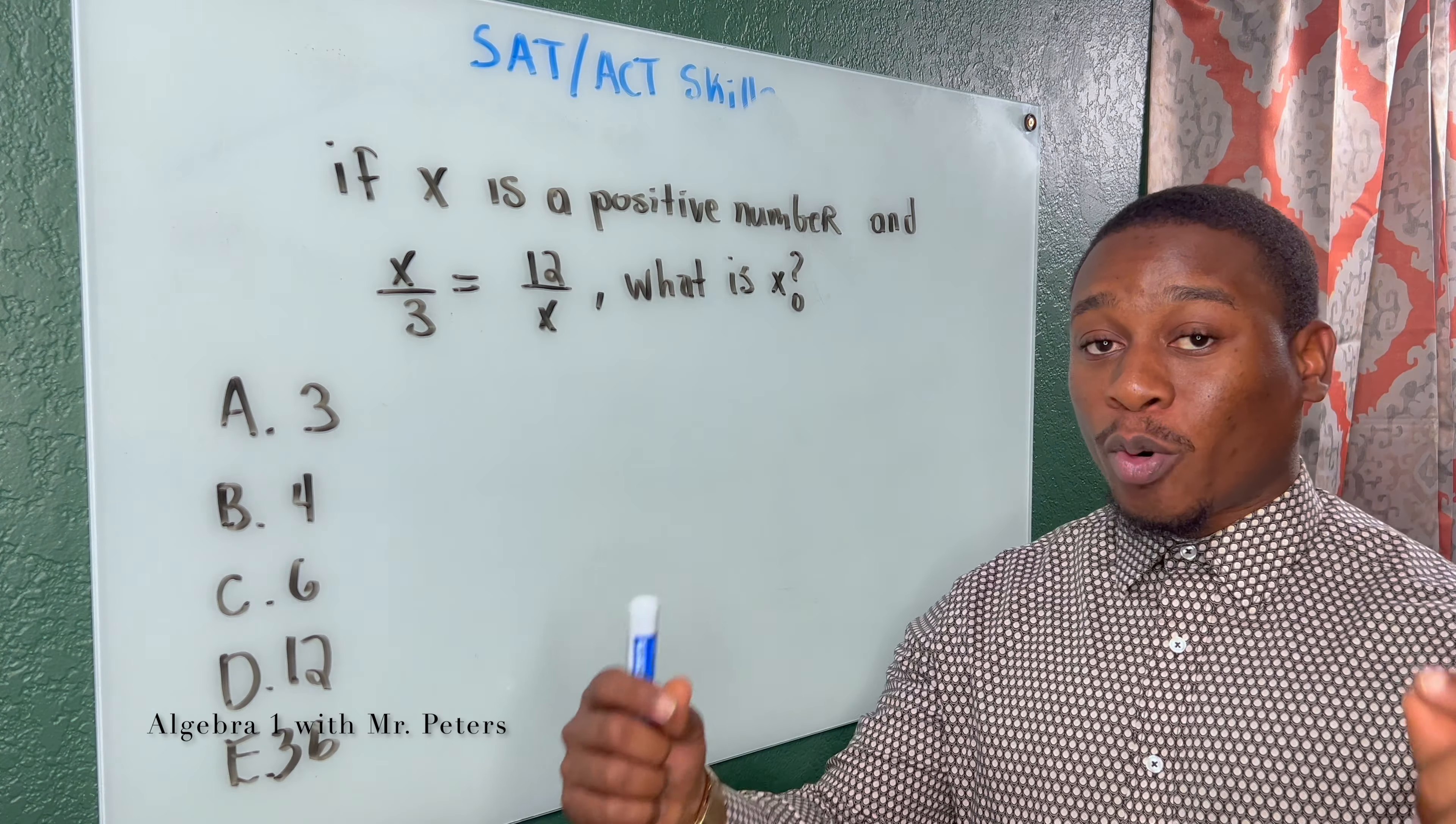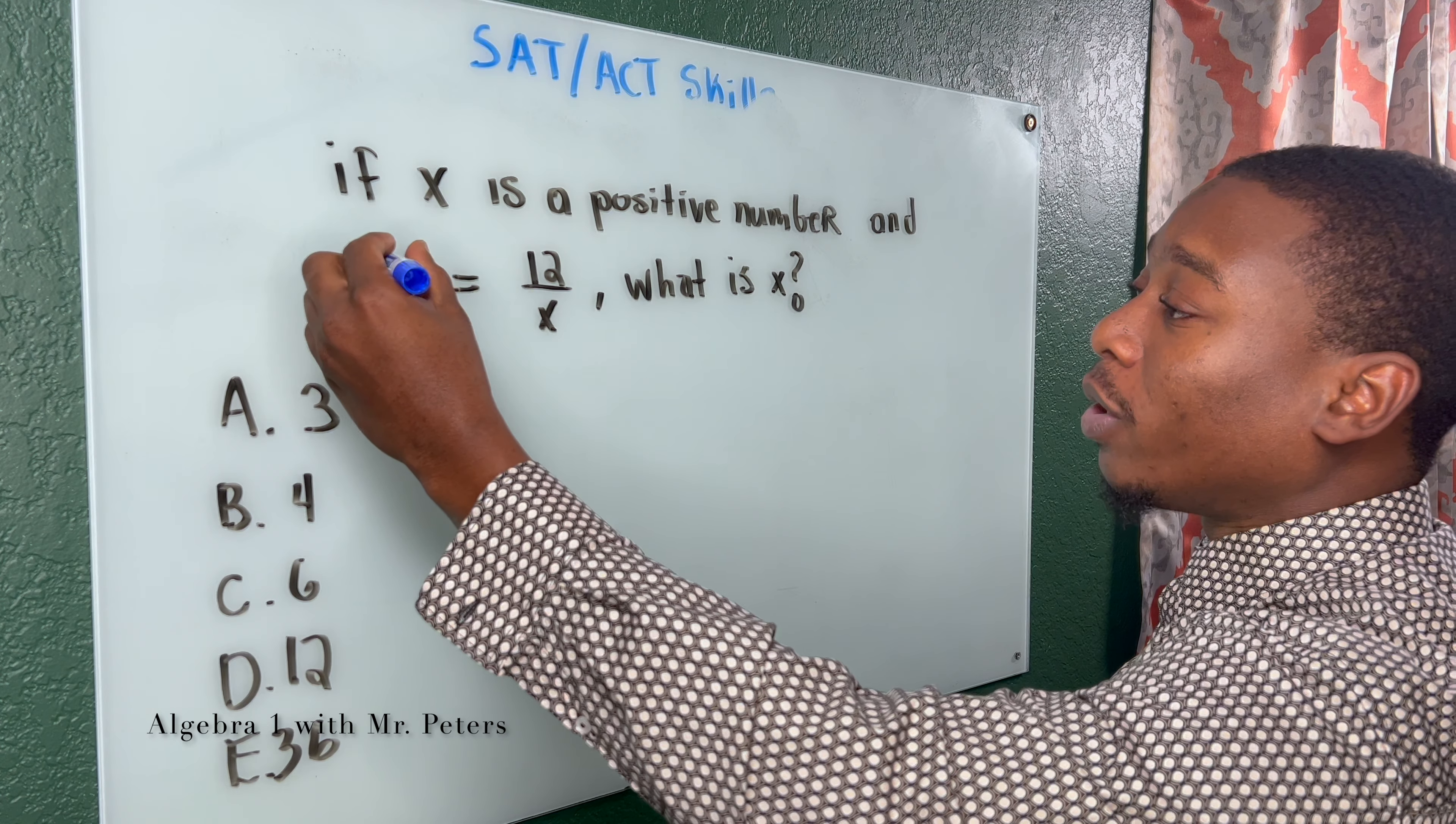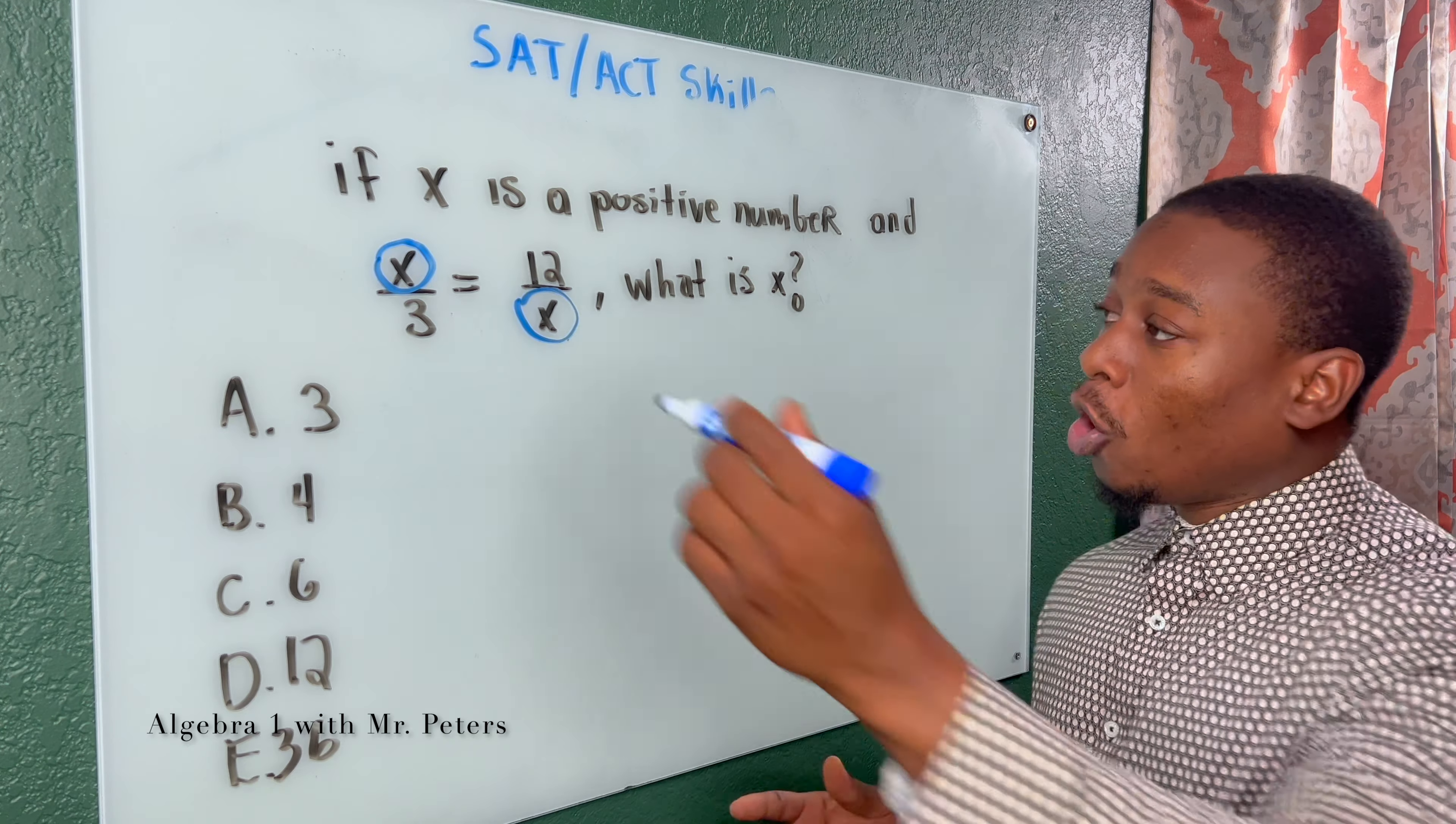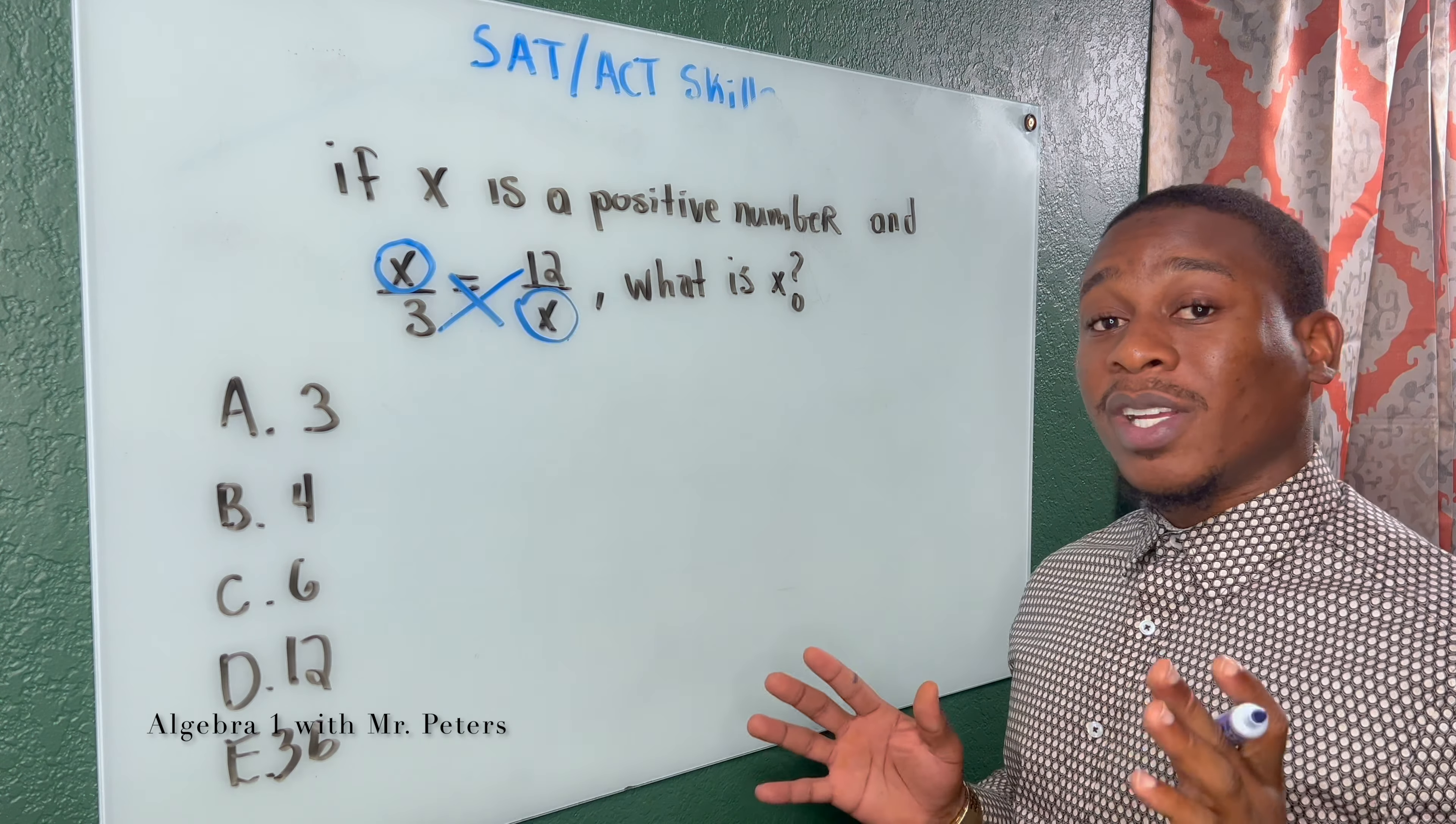So we're going back to proportions again. And what I want you guys to understand is that this is a little bit different. Typically, there's only one missing term, but in this problem, they gave us two. So that's just to confuse us. We're going to do the same exact thing, which is cross multiply, create an equation, and solve. Just because X is in more than one spot, it does not change the process.